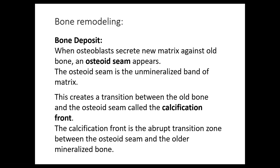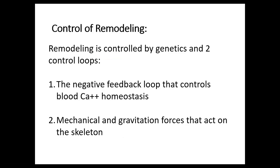Number fifteen: what factors regulate and control bone remodeling? Remodeling occurs continuously but is regulated by genetic factors and two control loops. First is the negative feedback hormonal loop for calcium, which maintains homeostasis of calcium balances within the body and controls blood calcium levels rather than bone integrity. Second is mechanical and gravitational forces that act on the skeleton.